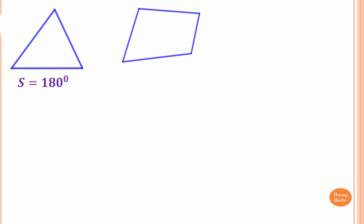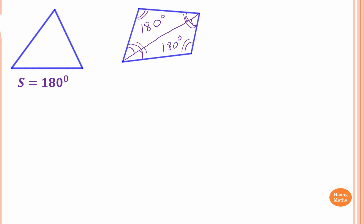...360 degrees. Now if I draw a diagonal, it becomes two triangles. This angle, this angle, and this angle add up to 180 degrees because the angle sum of a triangle is 180 degrees. This angle and this angle also add up to 180 degrees. So altogether we have 360 degrees — in other words, these angles add up to 360, which is 180 degrees times 2.